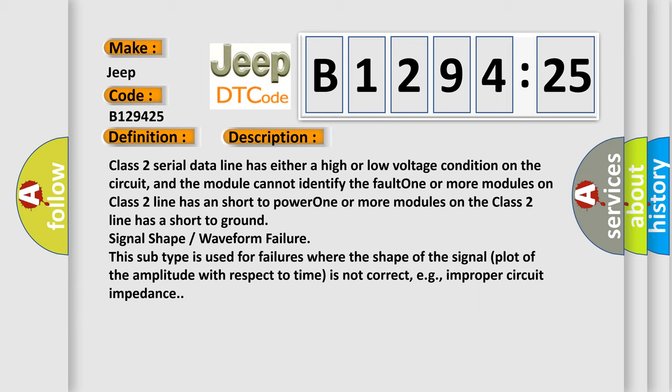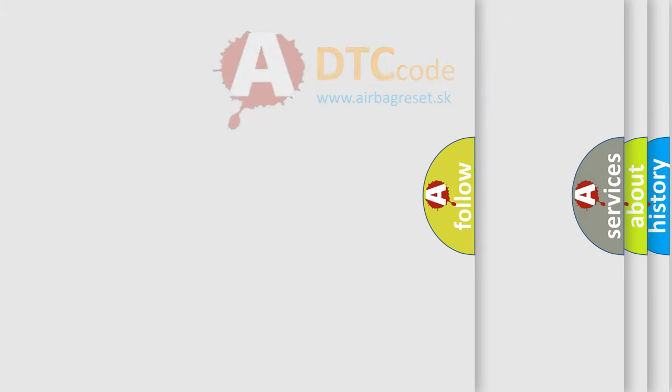Class 2 serial data line has either a high or low voltage condition on the circuit, and the module cannot identify the fault. One or more modules on class 2 line has a short to power, one or more modules on the class 2 line has a short to ground, signal shape waveform failure. This subtype is used for failures where the shape of the signal (plot of the amplitude with respect to time) is not correct, e.g., improper circuit impedance.